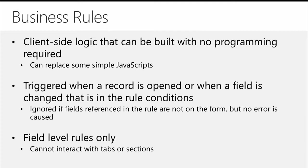Before talking about how to build them, there are a couple of key things to remember. The first is how they're triggered — they're triggered when a record is opened or when a field changes that has a rule or condition associated with it. When somebody opens up a record, the business rules evaluate to determine whether or not they should be applied. It's also important to note this is a little different from calculated fields — calculated fields don't actually update or calculate until the record has been saved or reloaded.